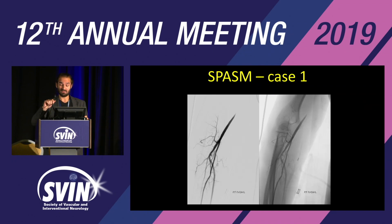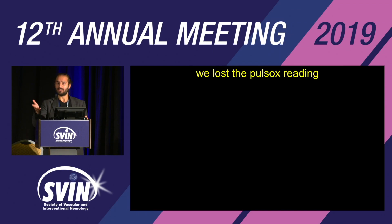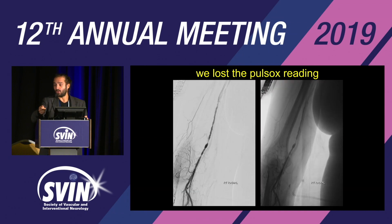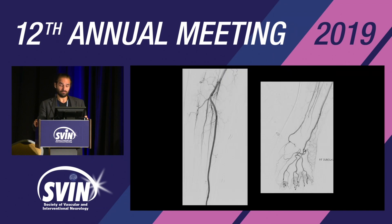This is a case from early in our radial experience. We started the case normally with no particular issues and began the angiogram. At a certain point, we lost the pulse ox reading — we put the pulse ox on the thumb when going radial for continuous flow monitoring. We lost the reading while doing the angiogram. We pulled back the catheter and were able to pull it out, though it was a little harder. We encountered severe spasm, so we decided to switch to femoral and finish the case. At the end, by adding more verapamil, it was resolved.